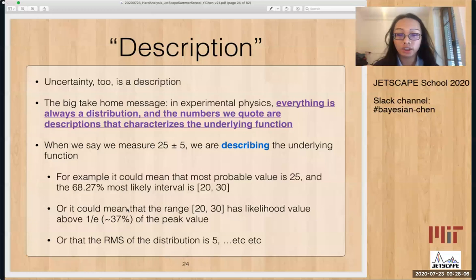The uncertainty is also a description of the function. So the big take home message from this session is that in experimental physics everything is always a distribution, the likelihood or posterior function, and the numbers we quote are actually just descriptions that characterize the underlying function. So even if you forget everything else I said, this is the thing that I would like everyone to remember.